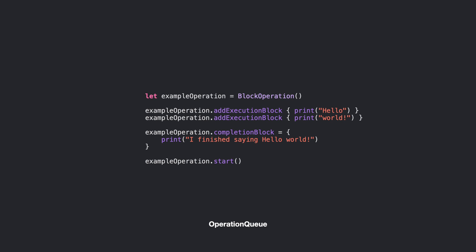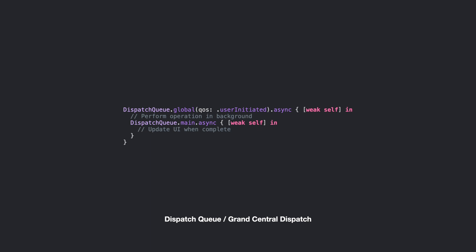Operation queue is actually built on top of GCD but adds extra functionality: it lets you establish dependencies between tasks so you can specify an order, and it gives you the option of pausing, cancelling, and resuming tasks. If you don't need any of that functionality and just want to dispatch a block of code to a serial or concurrent queue, you can use GCD directly. I would pick whichever one is the tightest fit for your needs.